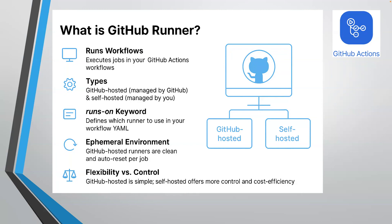What is the difference between these two? GitHub Hosted Runners are completely managed by GitHub where you don't have any control. Whereas if you want more control over the build environment, you can configure a self-hosted runner. Once you configure your CI/CD workflow and want to run your build on a specific runner, you use the keyword called 'runs-on'.